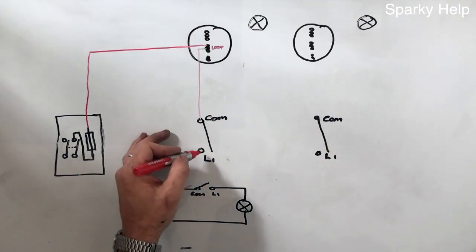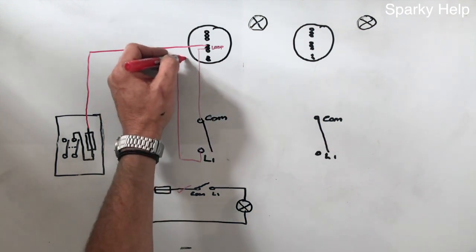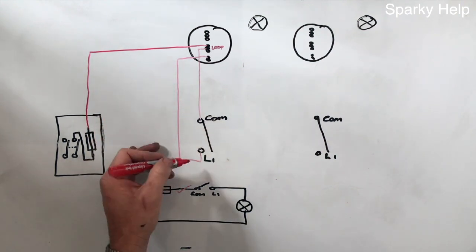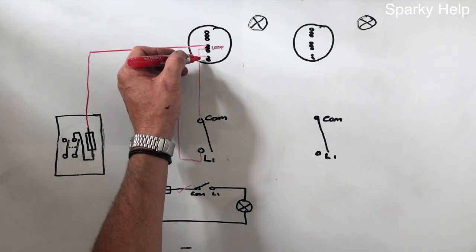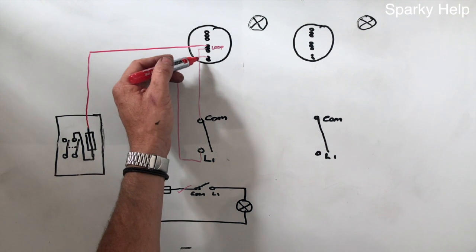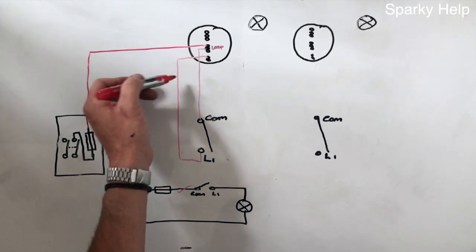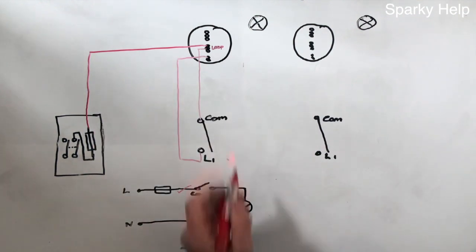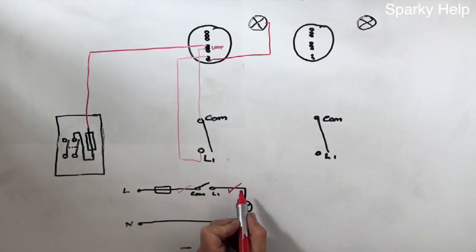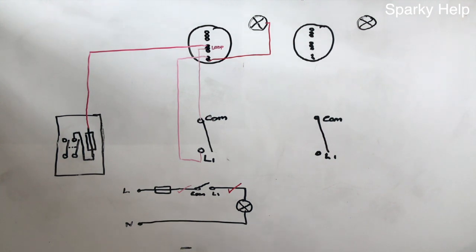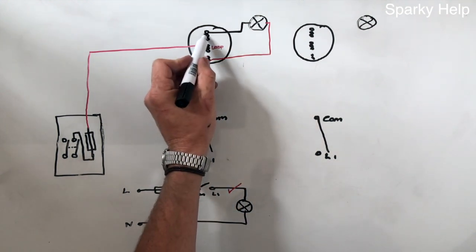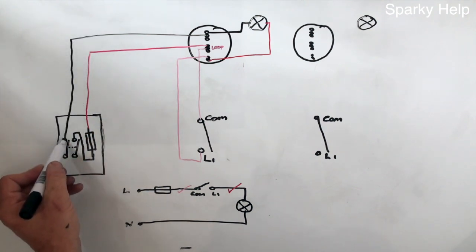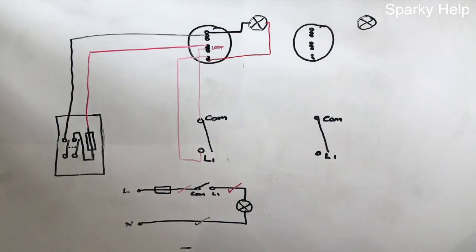It comes out the other side of the switch and goes back up to the lamp, but being three-plate it has to go through the ceiling rose. This cable would typically be in a twin-and-earth. We would have to put sleeving on this conductor to indicate it is a line conductor and not a neutral — brown sleeving should be on these ones. That goes to the lamp. We've then got to do the neutral: we come out of the lamp and go back to the neutral, which typically goes in the end terminal. That is a typical three-plate lighting system.